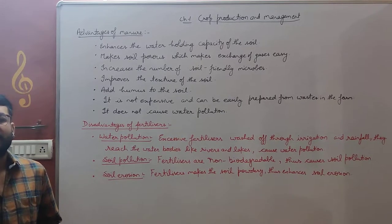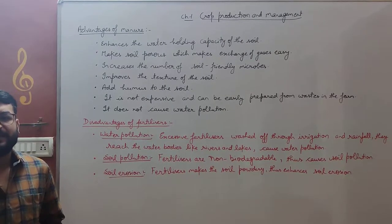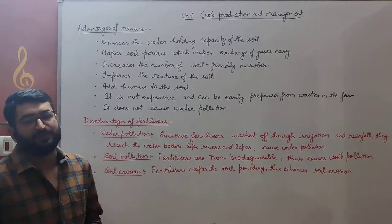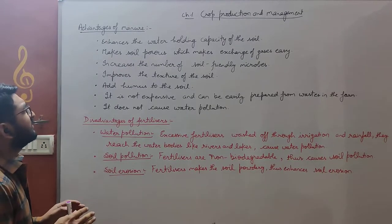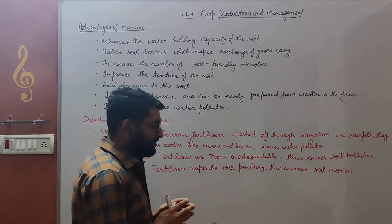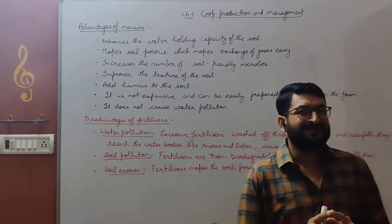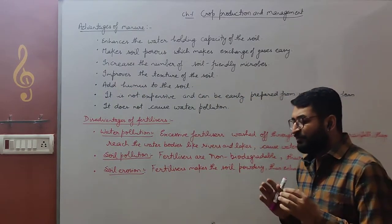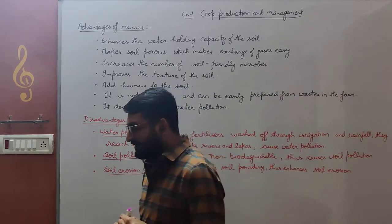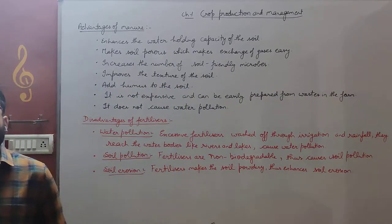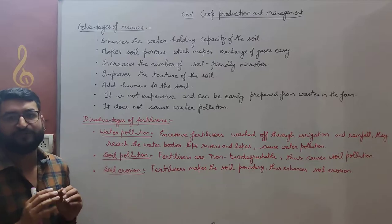Hello children. We are discussing the first chapter, that is crop production and management. In this we have already discussed about the first agricultural practice, that is how we prepare the soil by plowing and harrowing. The second step which we have discussed already is selection and sowing of seeds.